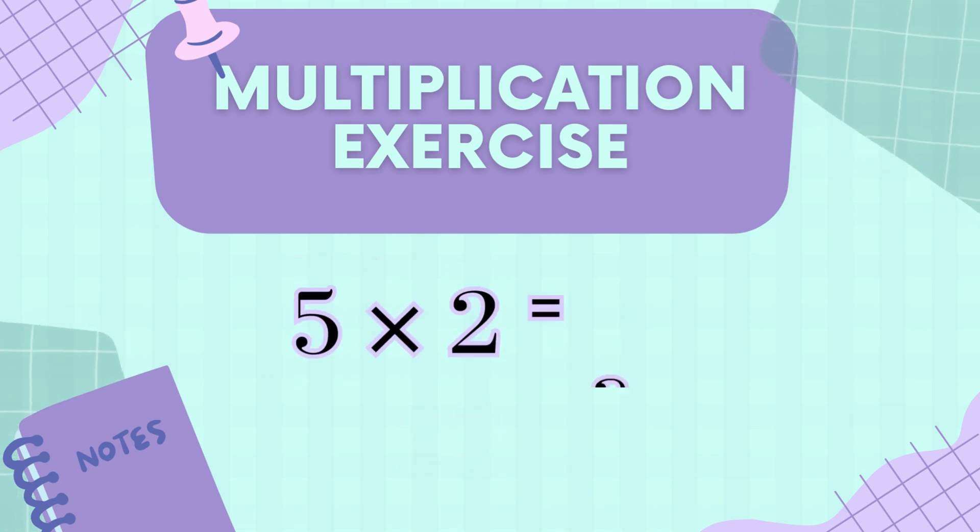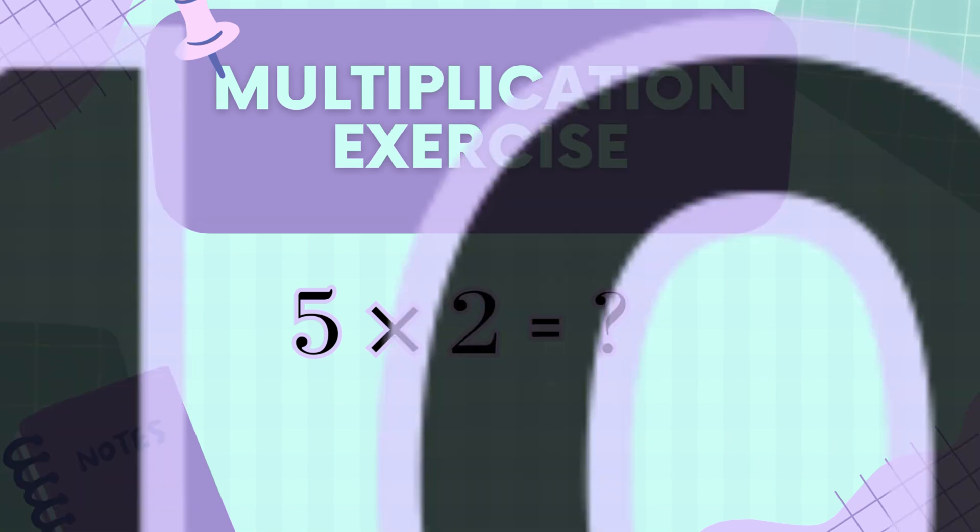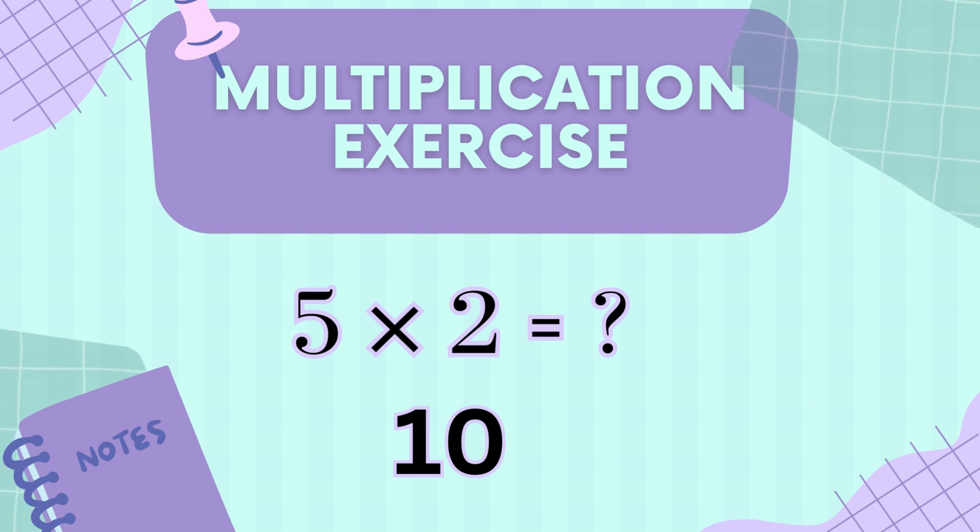For five times two, you're just swapping the order! Imagine five groups of two things each! Two, four, six, eight, ten! That's ten! You all are so shell-tastic! Let's go on to next question!